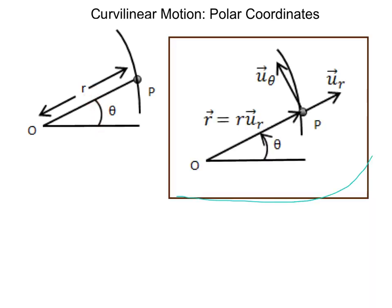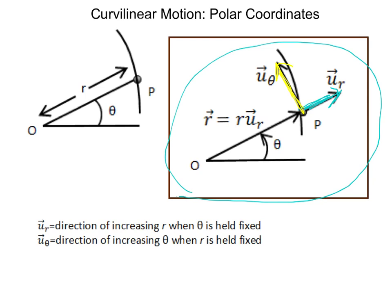Here's the core of what you're going to learn. We have our radial component and our transverse component. The unit vector u_r is the direction of increasing r when theta is held fixed, and u_theta, the transverse direction, is the direction of increasing theta when r is held fixed. Our position vector is r in the radial direction.